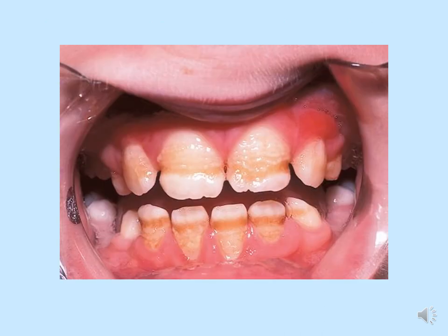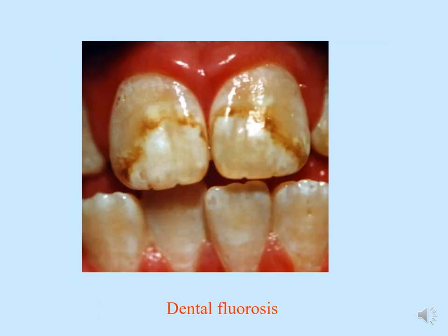Here is an example of a patient with hypoplastic enamel — this is normal enamel and this is the hypoplastic enamel, which is eroded and shows pigmentation. This is a clinical picture of dental fluorosis. When a child is exposed to high fluoride content in drinking water, fluoride affects amelogenesis — the enamel formation — affecting the appearance, structure, and form of the enamel.